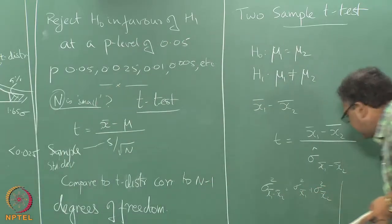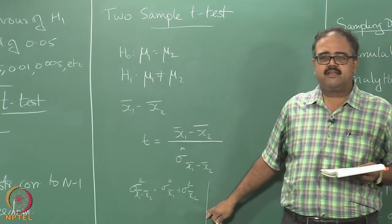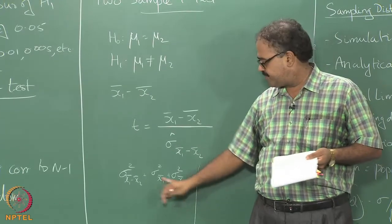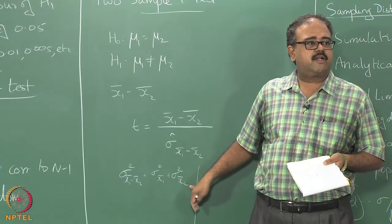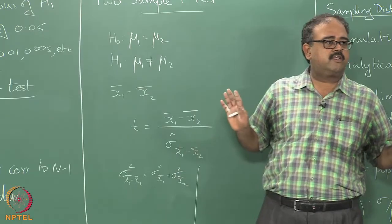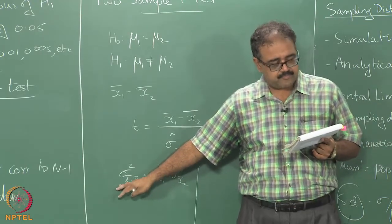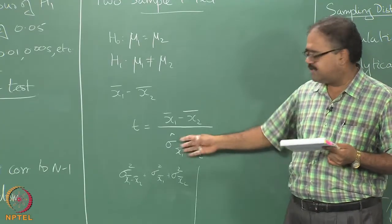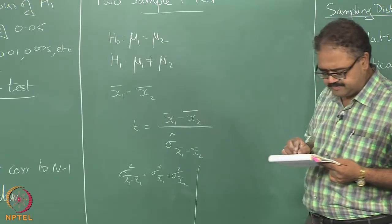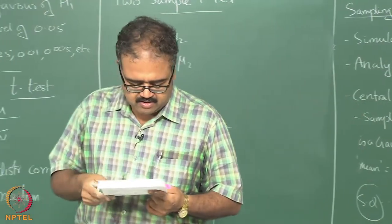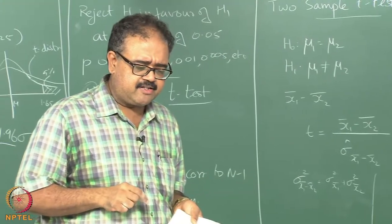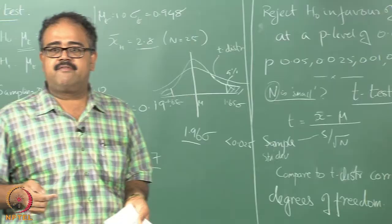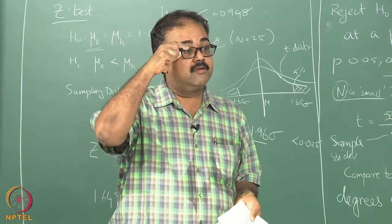These are details, nothing to get hung up about. I basically have to estimate this variance. How will I do this? I can take the samples drawn under algorithm 1 and estimate sigma-squared x1_bar, and look at the samples drawn under algorithm 2 and estimate sigma-squared s2_bar. But there is a small advantage I can take here — I am assuming that the variances are equal, so we can do something called a pooled estimate.